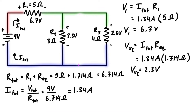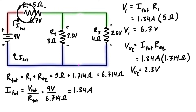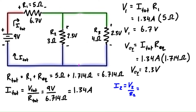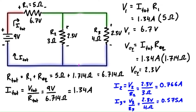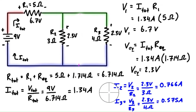The last thing we can solve is the currents flowing through all of the resistors. The current flowing through resistor 1 is just equal to I total, which is 1.34 amps. Then we can solve using Ohm's law, rearranging for current, to find the current flowing through resistor 2 to be 0.766 amps, and the current flowing through resistor 3 to be 0.575 amps.